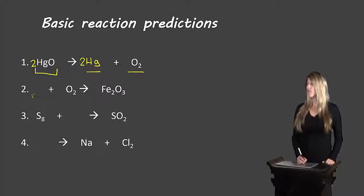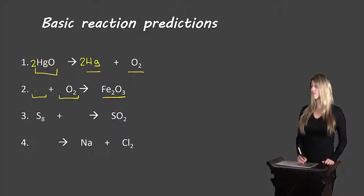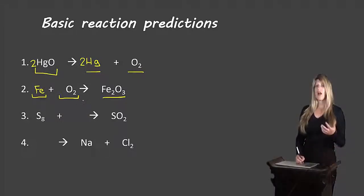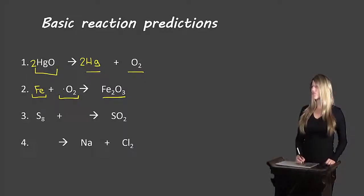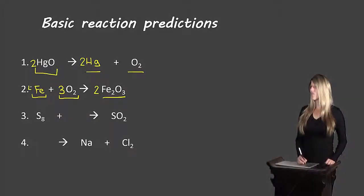The next example has two reactants and one single product, so it's a synthesis reaction. We have iron and oxygen on the right side, but only oxygen on the left, so iron is the missing reactant. Iron is a standalone metal — not diatomic — so we leave it as is. Balancing: we have two oxygen on the left and three on the right. We place a coefficient of 3 in front of O₂ and a coefficient of 2 in front of iron(III) oxide, giving us four iron on the right. So we place a coefficient of 4 in front of iron on the left — now both iron and oxygen are balanced.